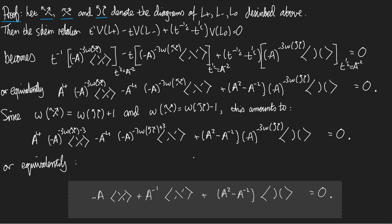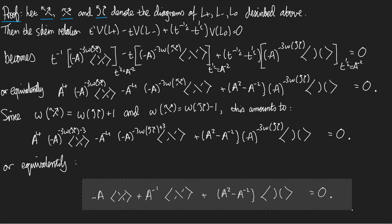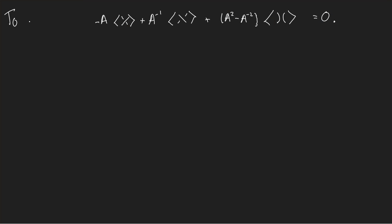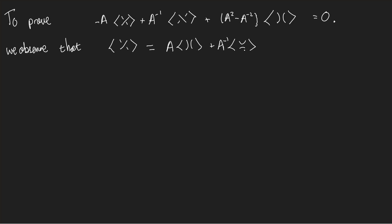The second step of the proof is to prove this equation. We use Kauffman axiom K3 on this symbol. K3 tells me that the positive crossing equals a times the horizontal smoothing plus a-inverse times the vertical smoothing. We apply K3 on the other crossing as well — that crossing looks like the wrong kind, but if we rotate 90 degrees to the right it becomes the right kind — giving a times one smoothing plus a-inverse times the other.